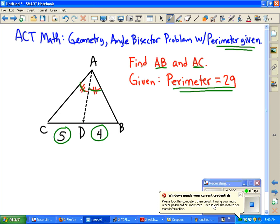If we're looking for AB, we could call this X. And if we're looking for AC, we could call it Y. But we also know that the perimeter is 29, so X plus Y plus 5 plus 4 equals 29. If we subtract 9 on both sides, X plus Y equals 20. So Y is actually 20 minus X.